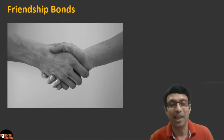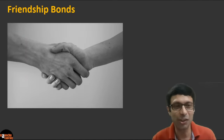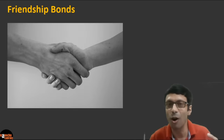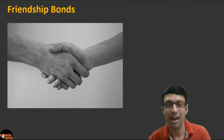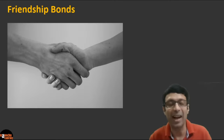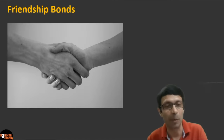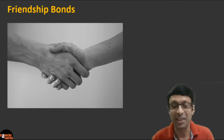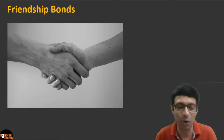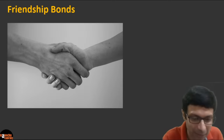Before we start on chemical bonding, let's talk about friendship bonds. All of us have so many friends and we make lifelong friendship bonds — we make friends so that we can have fun and these friends help us and support us throughout our lives. Similarly, we are going to talk about the friendship bonds of atoms, which are chemical bonds.